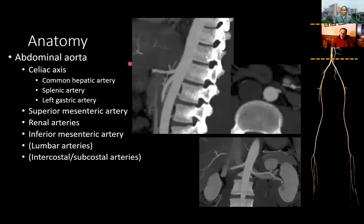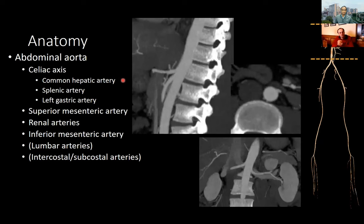We'll briefly review the anatomy so we're all speaking the same language. The abdominal aorta's initial branch is the celiac artery, which trifurcates into the common hepatic, splenic, and left gastric arteries. Then we have the superior mesenteric artery and the renal arteries, and finally the inferior mesenteric artery before the bifurcation of the abdominal aorta. While none of these vessels are technically part of the runoff to the lower extremity, they're useful to assess as they may provide valuable clues in the setting of embolic disease.